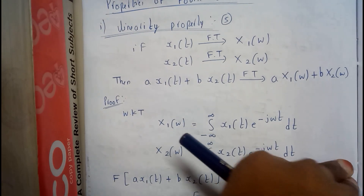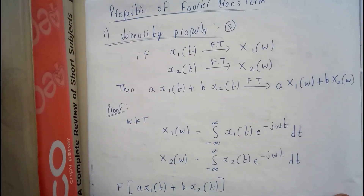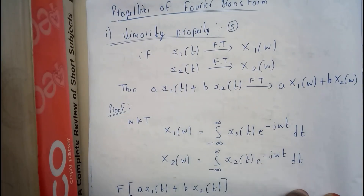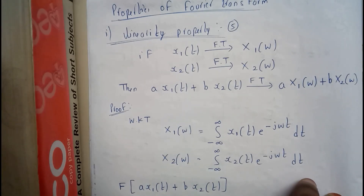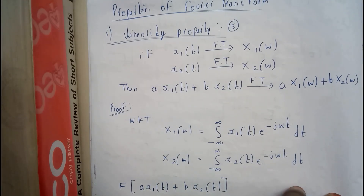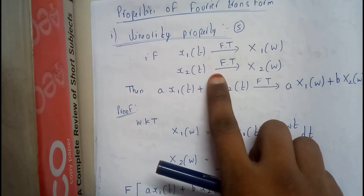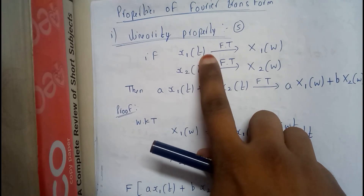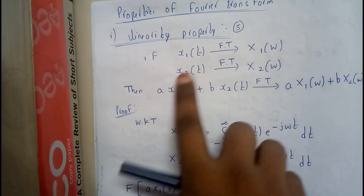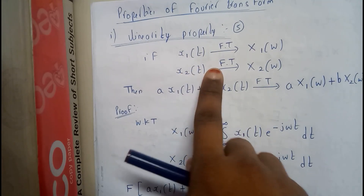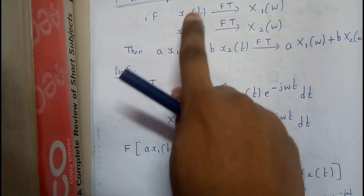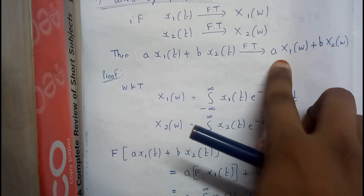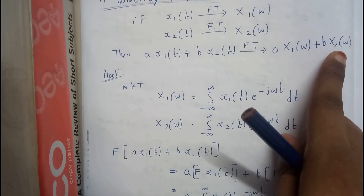Hello guys, we are back with our next tutorial. In this tutorial we'll be going through properties of Fourier transform — we have almost seven to eight properties to discuss. Let us start with the linearity property. When we do the Fourier transform for x1(t) we assume the result as X1(ω), and for x2(t) it is X2(ω). So a·x1(t) + b·x2(t) has a Fourier transform equal to a·X1(ω) + b·X2(ω).